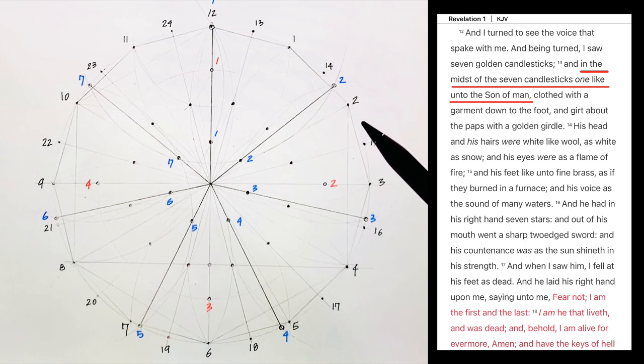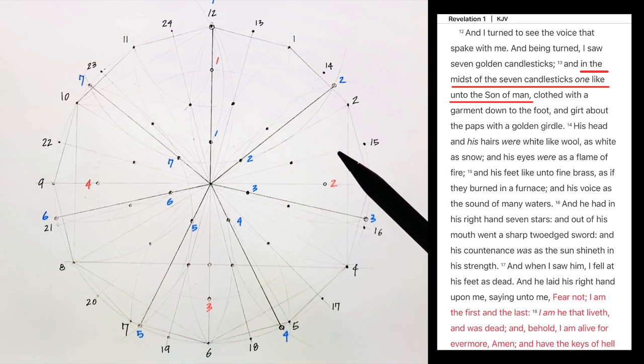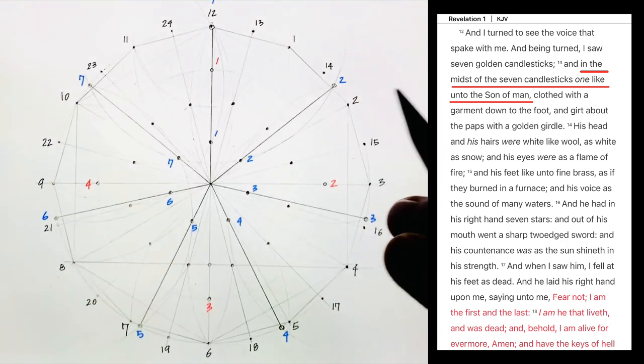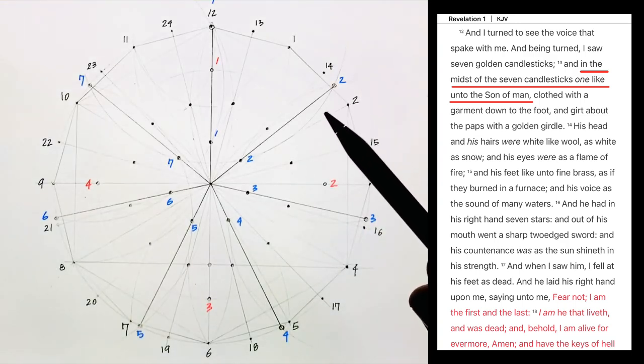And I, this is John speaking, turned to see the voice that spoke with me, and being turned, I saw seven golden candlesticks. Verse 13, and in the midst of the seven candlesticks, one like unto the Son of Man, clothed with the garment down to the foot, and girt about the paps with a golden girdle.